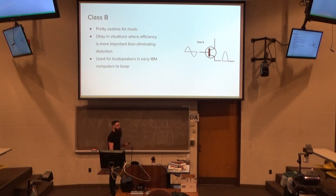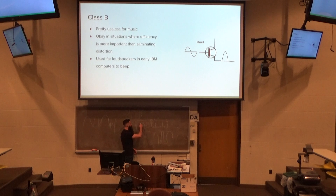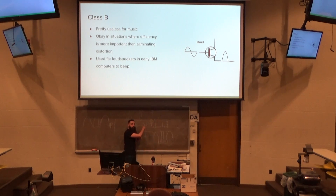In Class A, the power coming from the supply is always on, and the gate is still attenuating — it's changing the signal.